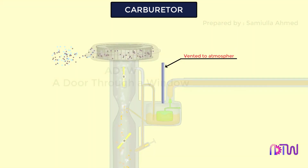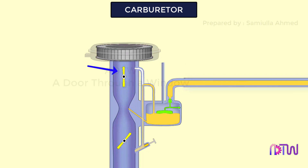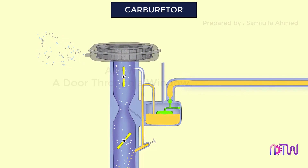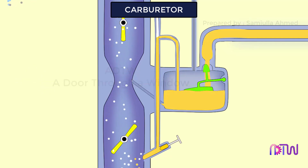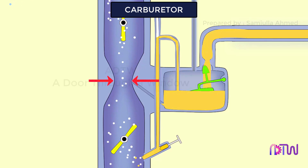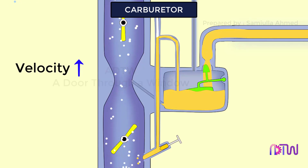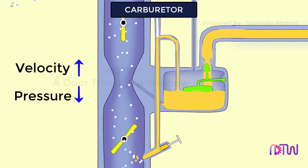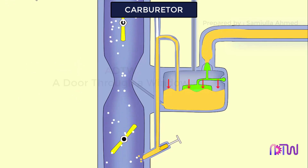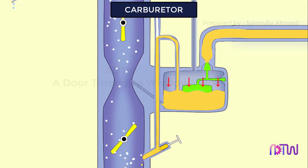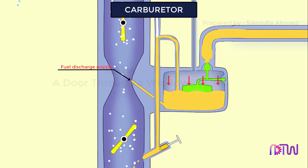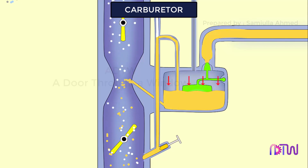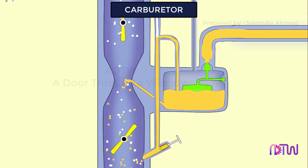The float chamber is vented either to the atmosphere or to the upstream side of the venturi, keeping it at atmospheric pressure. During the suction stroke, air is drawn into the venturi, which has a minimum cross-sectional area at the throat. As air passes through the venturi, velocity increases to a maximum at the throat, causing pressure to decrease. The atmospheric pressure inside the float chamber pushes fuel through the metering orifice and out of the fuel discharge nozzle, where it atomizes and mixes with air.